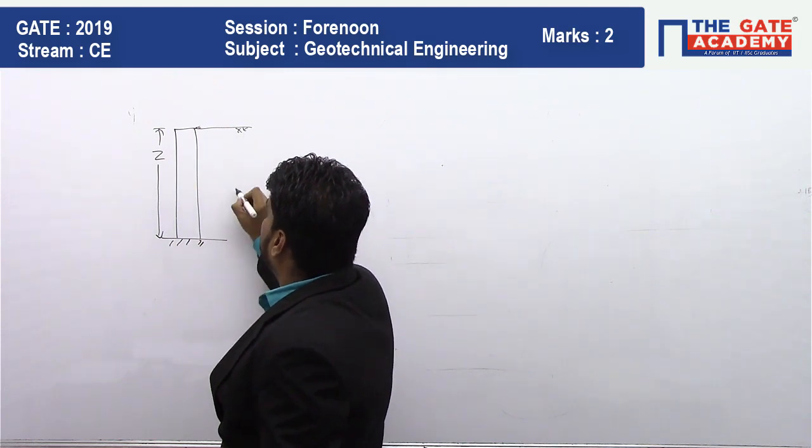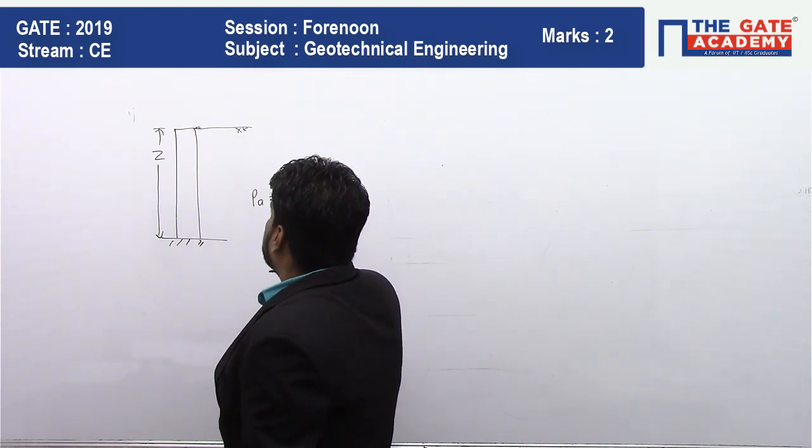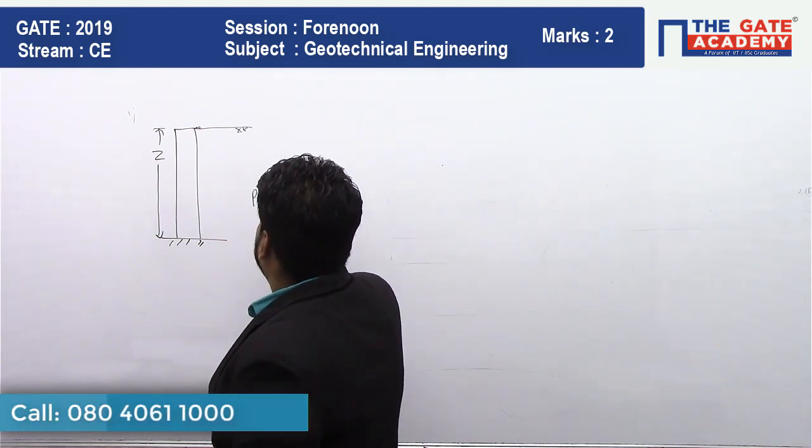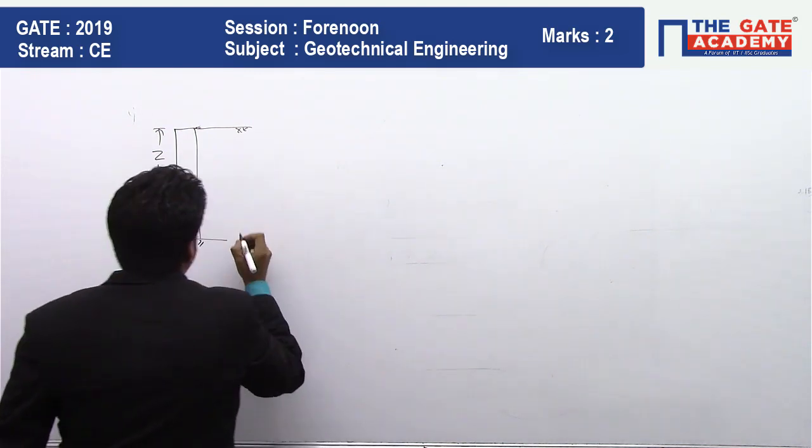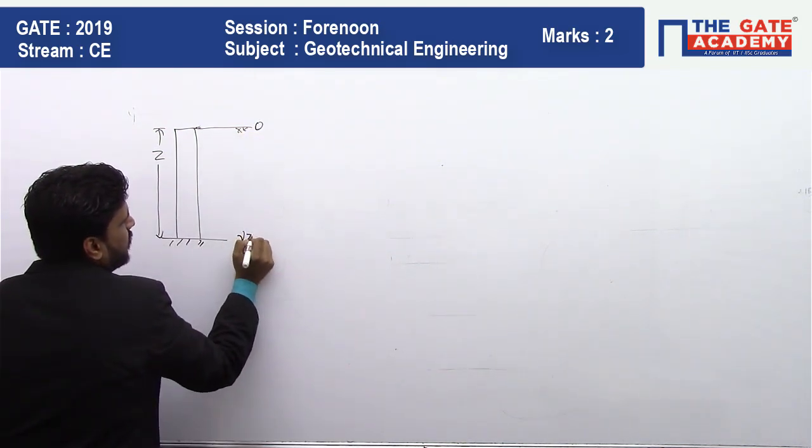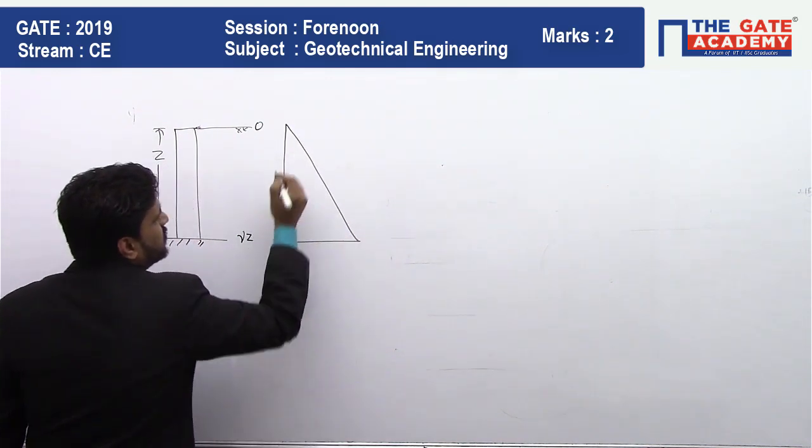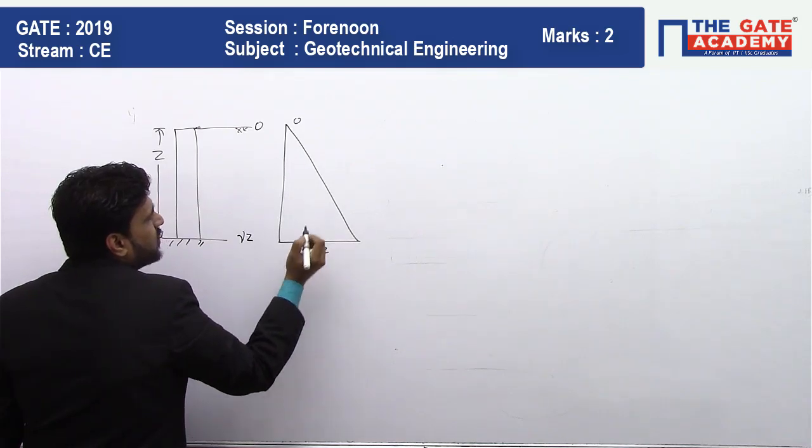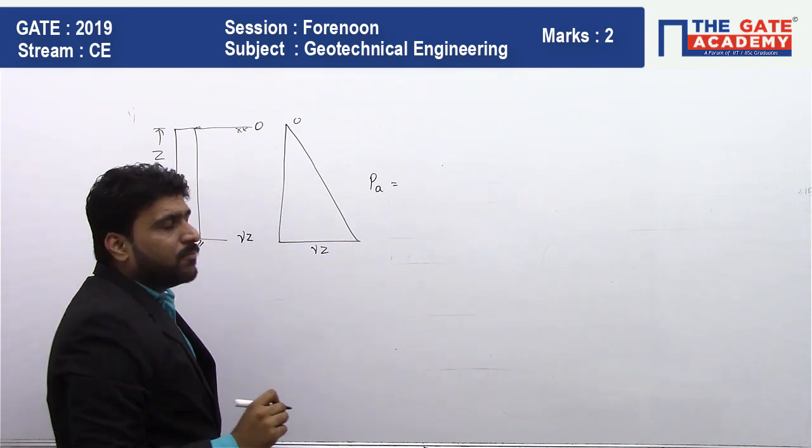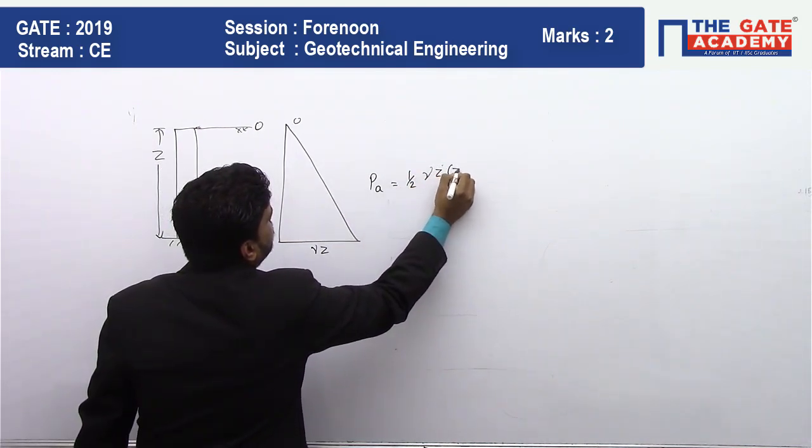We know Pa will come as gamma z. What will be the value of Pa here? Here the stress is zero, here the stress is gamma z. So this is the variation in the stress, zero to gamma z. What is the area for this triangle? The area will give you the active earth pressure: half gamma z into z.